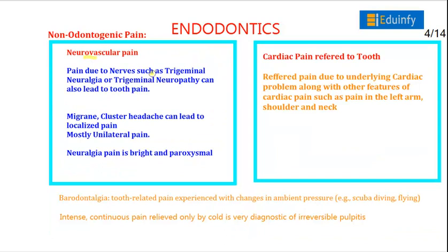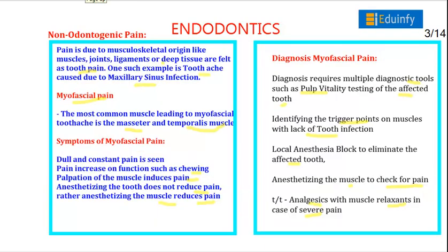Neurovascular pain is due to trigeminal neuralgia or trigeminal neuropathy, and also leads to tooth pain. Migraine and cluster headaches can lead to localized, unilateral pain. Neuralgia pain is bright and paroxysmal, whereas in myofascial pain the pain is dull and constant.